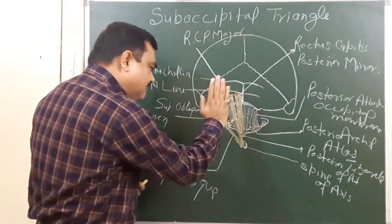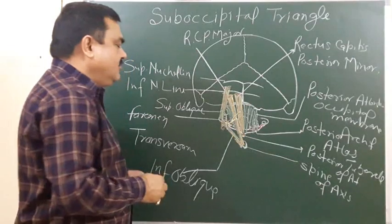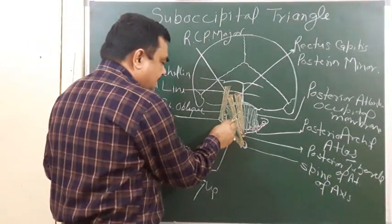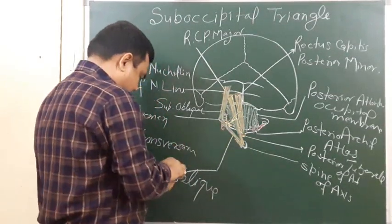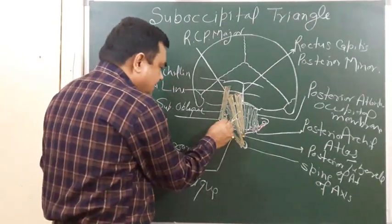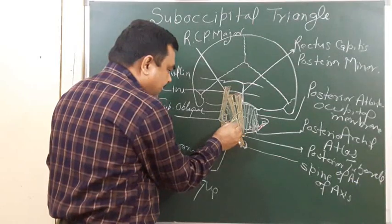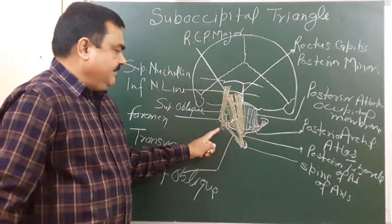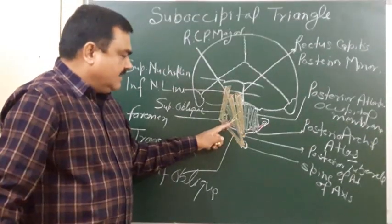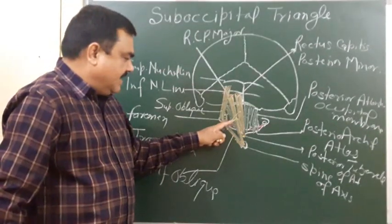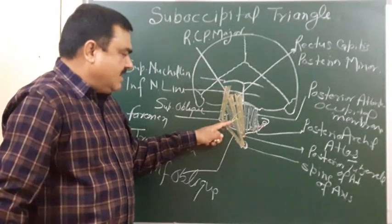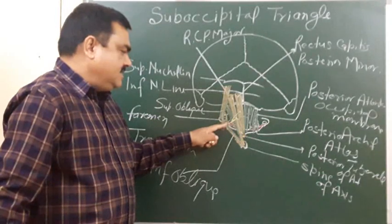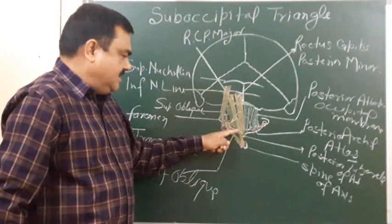It also gives supply to the muscle which lies over this and forms the roof. The contents of this triangle are two important things: one is the third part of the vertebral artery, and the other is the C1 spinal nerve — its dorsal division — which gives supply to the branches of these muscles.